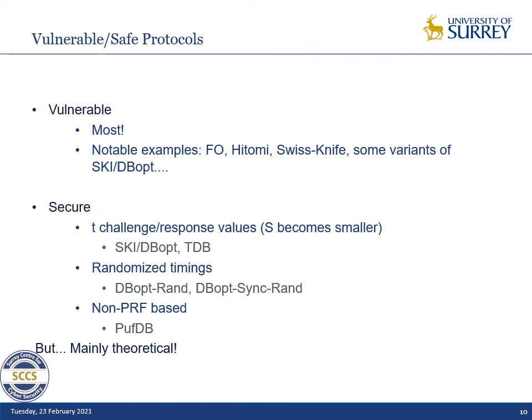Here are a few vulnerable and safe protocols. Most terrorist fraud resistant protocols — or protocols attempting to be terrorist fraud resistant — are vulnerable to this attack. Notable examples are FO, Hitomi, Swiss-Nice, some variants of SCI, and DBOPT. Interestingly, FO, SCI, and DBOPT were proven secure in their respective formalisms. Regardless, this attack completely goes around the model through directional antennas and enables new attacks.